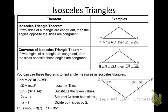The first thing we're going to talk about today is the isosceles triangle theorem and then the converse of the isosceles triangle theorem. Any time you say converse, it just means the same thing going both ways. The isosceles triangle theorem says that if two sides of a triangle are congruent, then the angles opposite those sides are congruent.